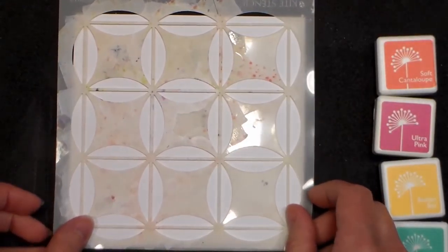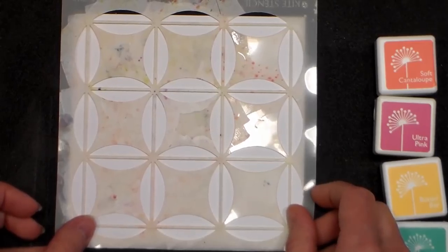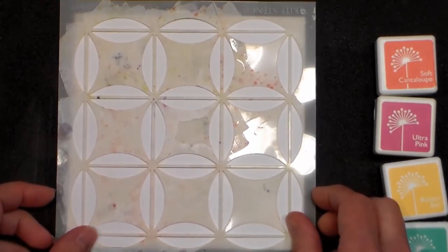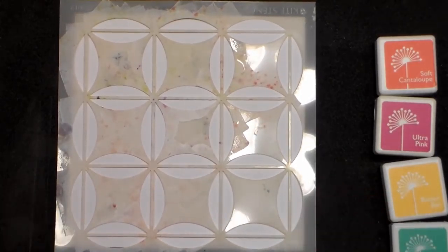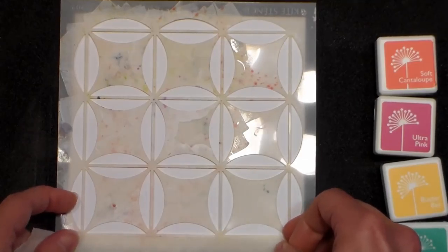I'm starting off with a five and a half by five and a half square of heavyweight white cardstock, and I'm using this stencil—it's a kite stencil by Judy Kins—to kind of separate my paper.